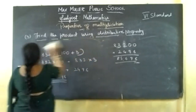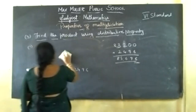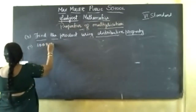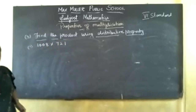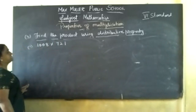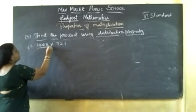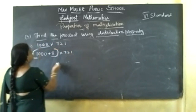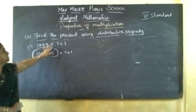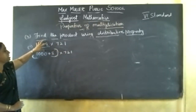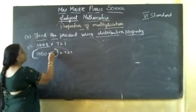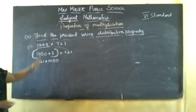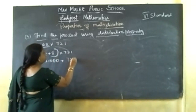Second question: 1008 into 721. How can you distribute? You can distribute like 1000 plus 8 equals 1008. So we go for addition: 1000 plus 8 into 721. First multiply by 1000, then 8, then add. Using commutative property, you can go 721 into 1000 plus 721 into 8. 721 into 1000 gives 721,000. Plus 721 into 8.